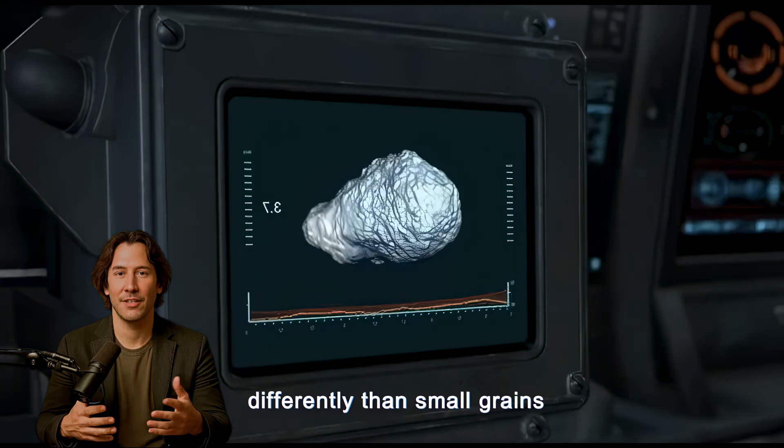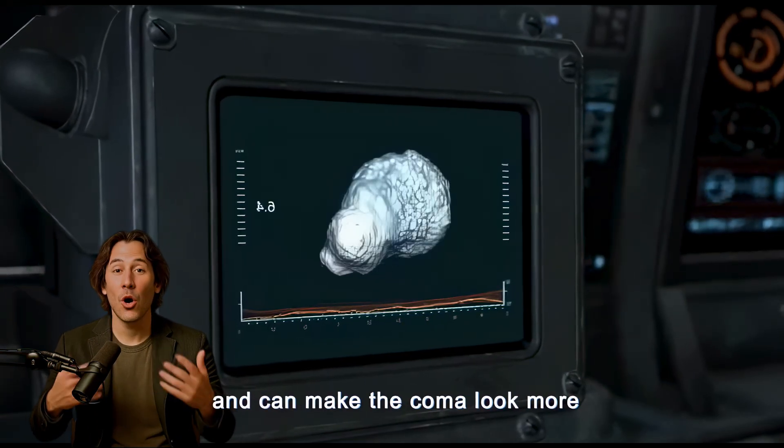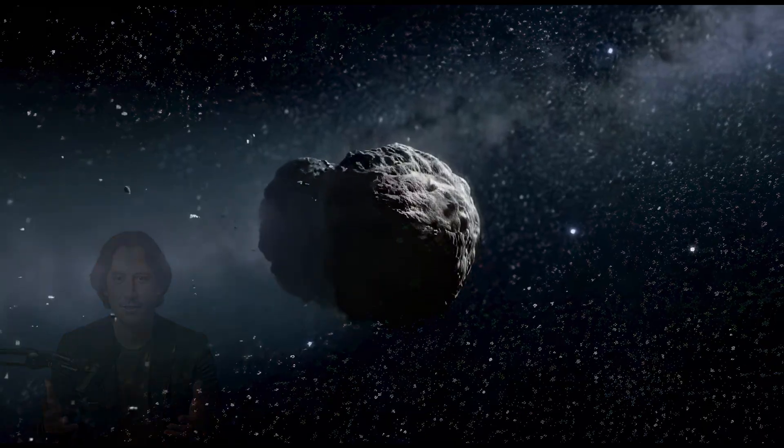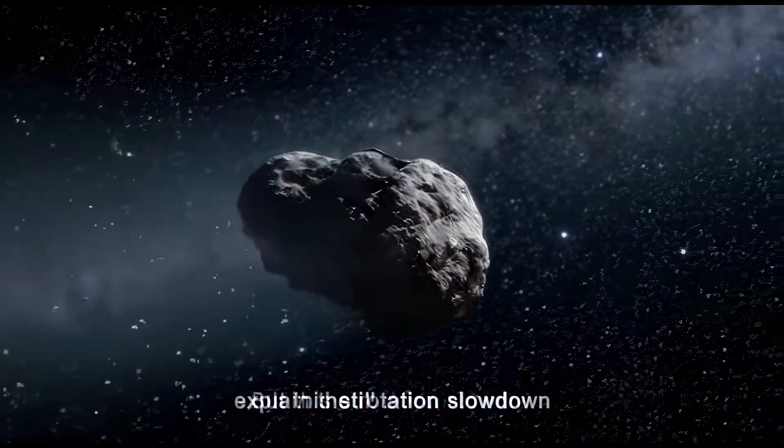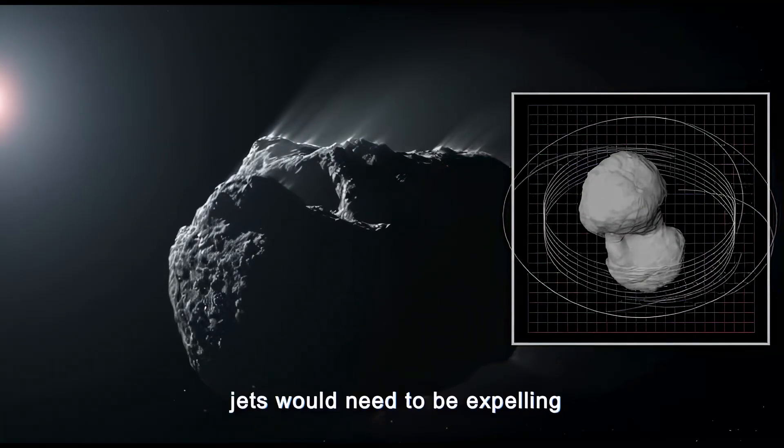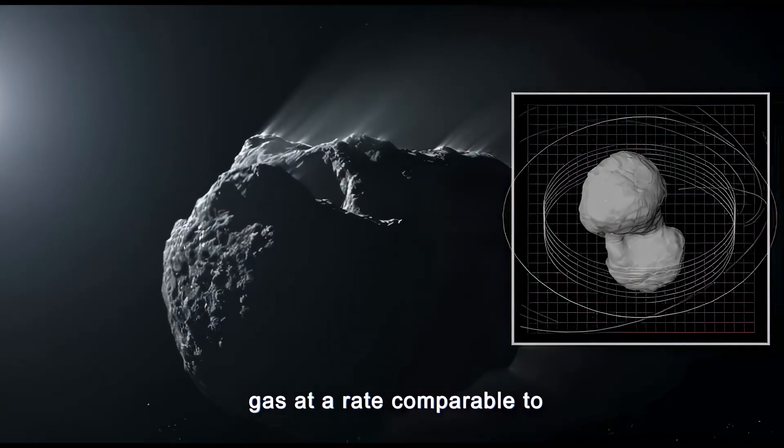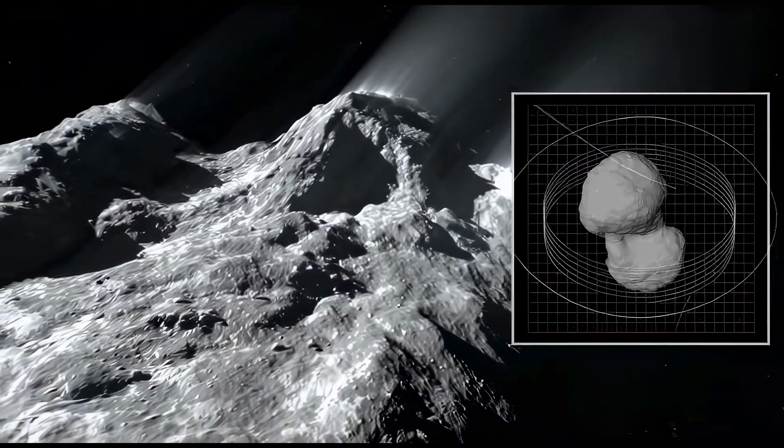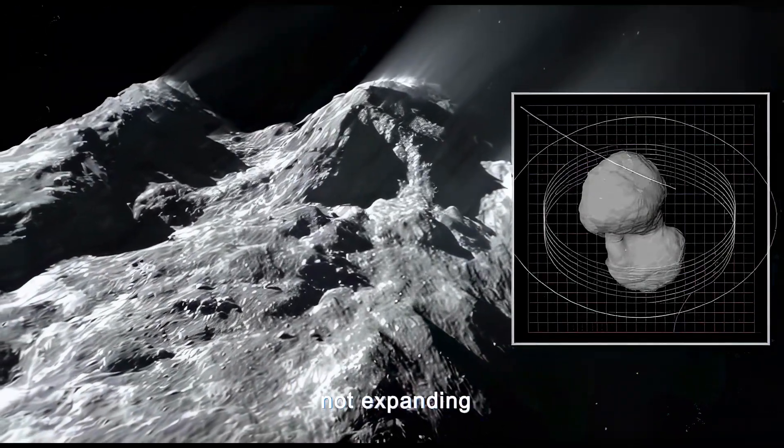Larger grains reflect sunlight differently than small grains, and can make the coma look more condensed even when activity has not completely stopped. But this still does not fully explain the rotation slowdown. To change the rotation speed this quickly, jets would need to be expelling gas at a rate comparable to, or greater than, what was seen earlier in the month. Yet the coma is shrinking, not expanding.